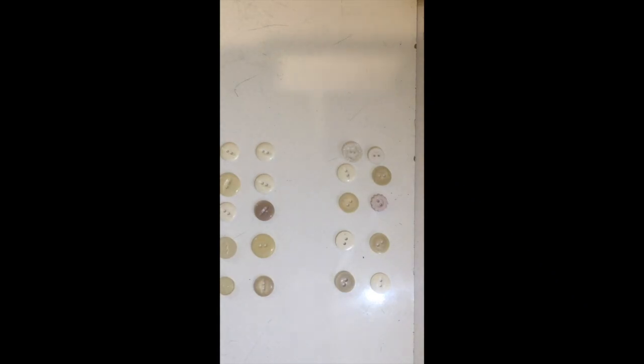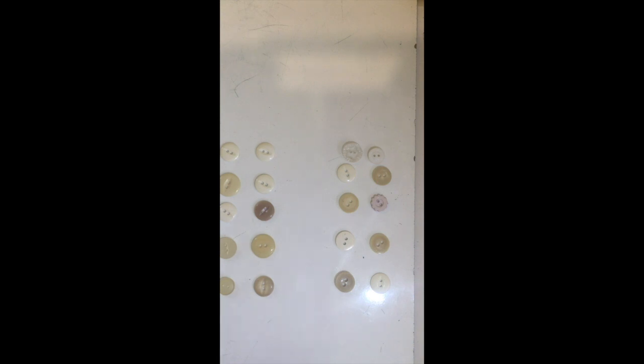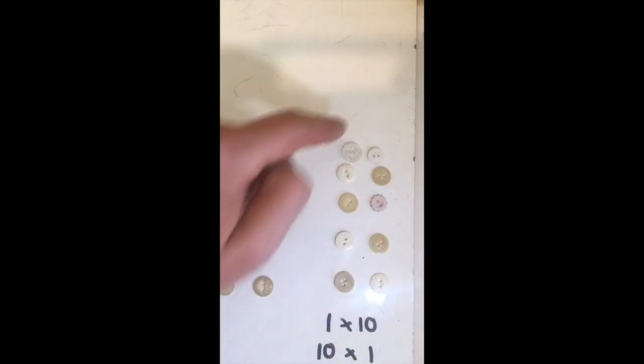Here I've got ten buttons in this group here. So I can either see this as one group of ten, or ten lots of one button. Either way there are ten buttons here.